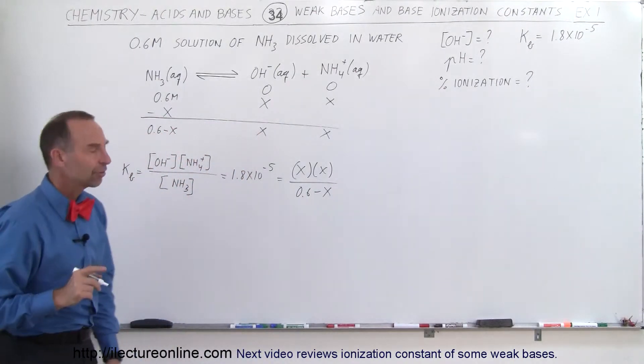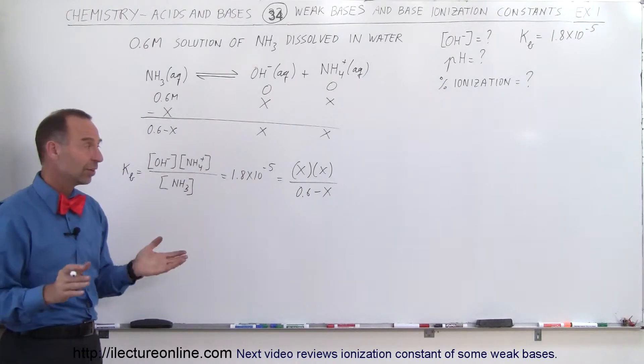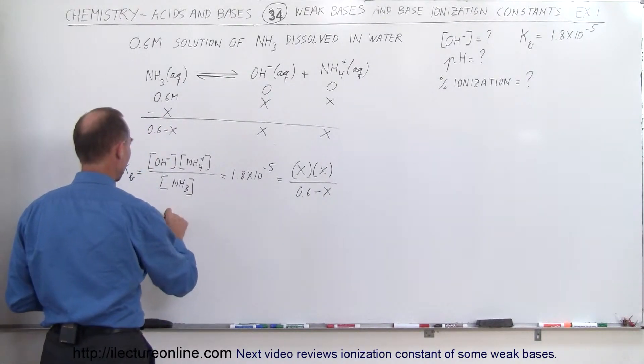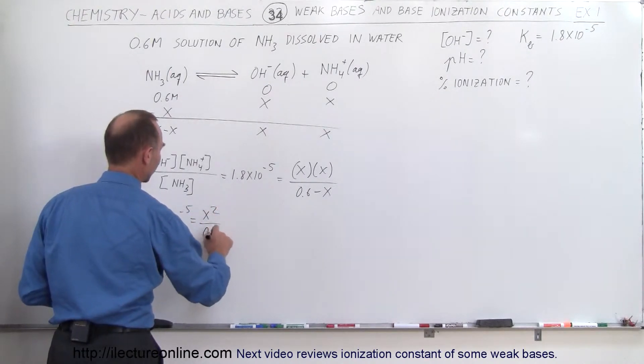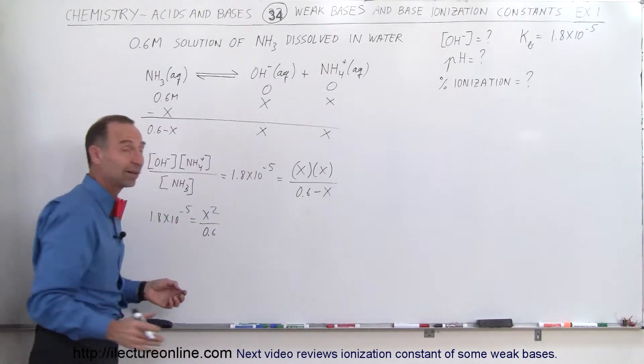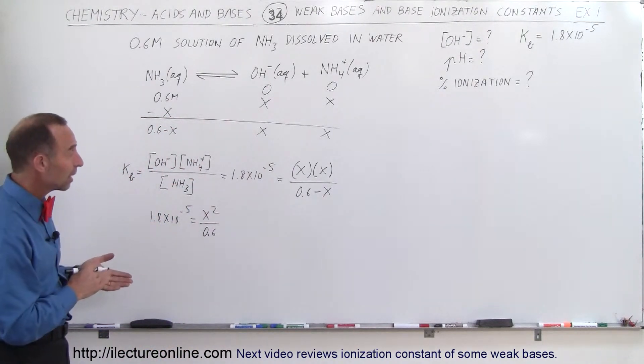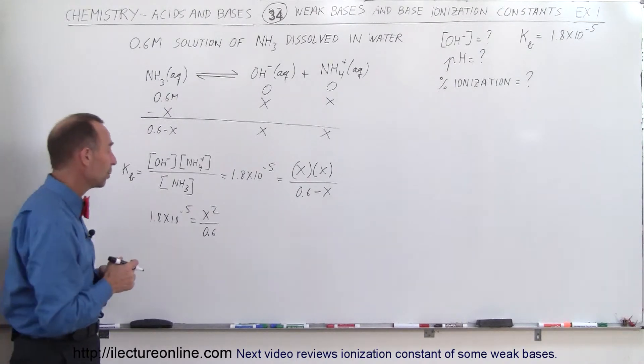Now, is X a very small number? Let's assume it is. X is much smaller than 0.6. If it is, we can make the approximation that 1.8 times 10 to the minus 5 is equal to X squared divided by 0.6, instead of writing 0.6 minus X. Again, if the percent ionization is less than 5%, we're in good shape. We can do that.